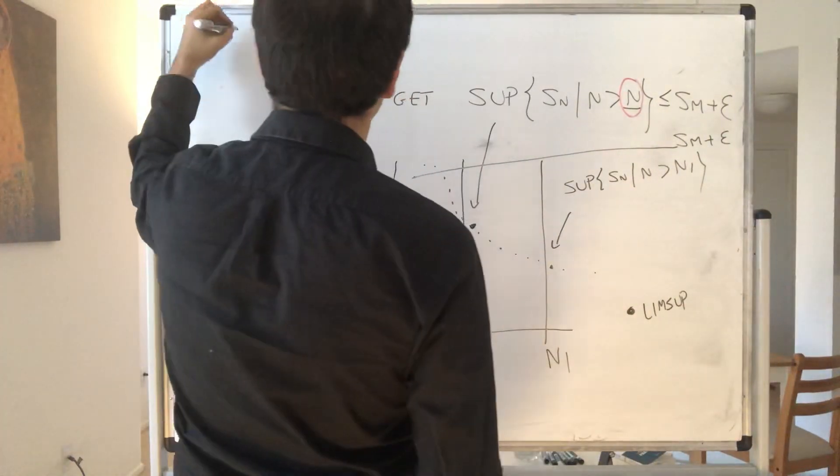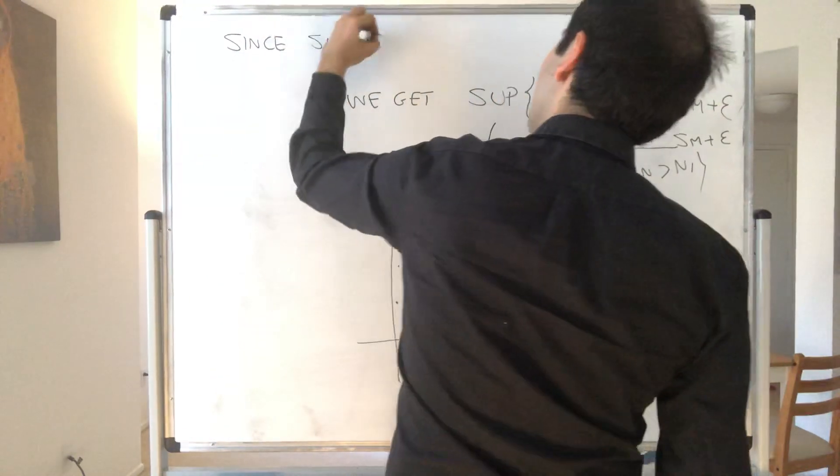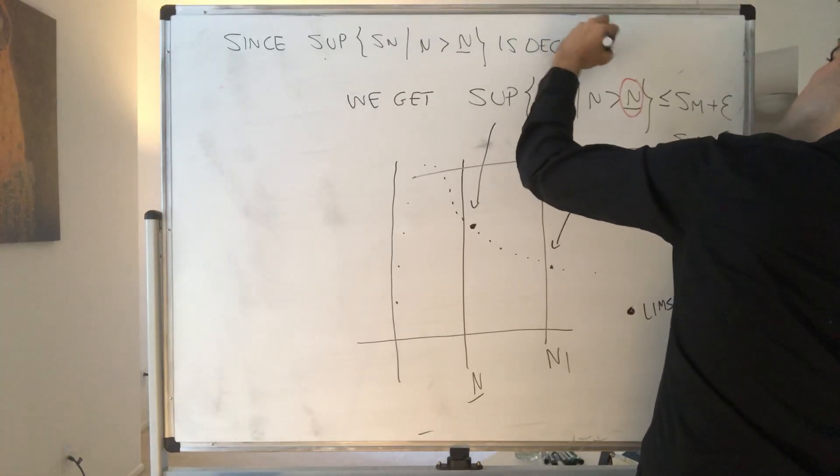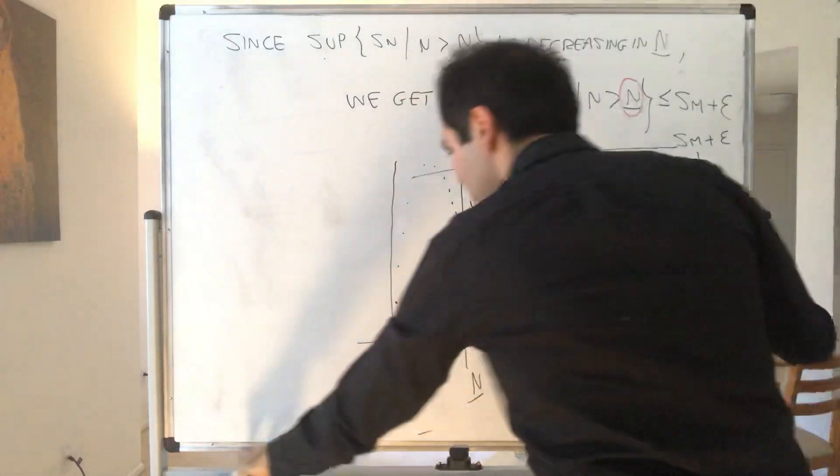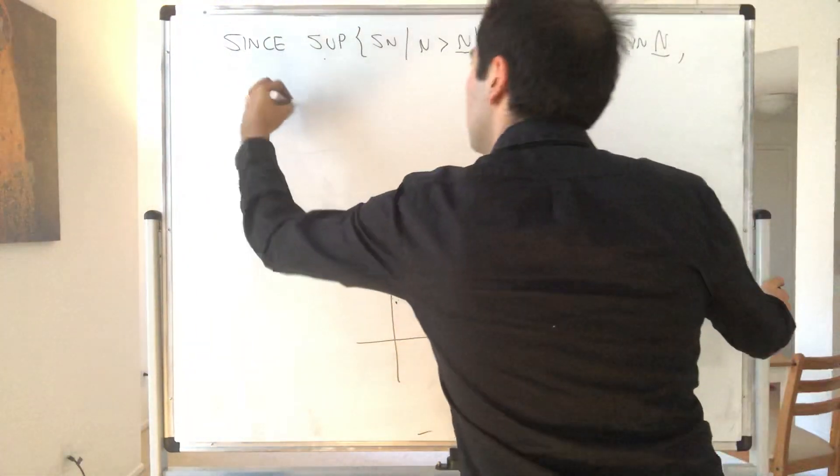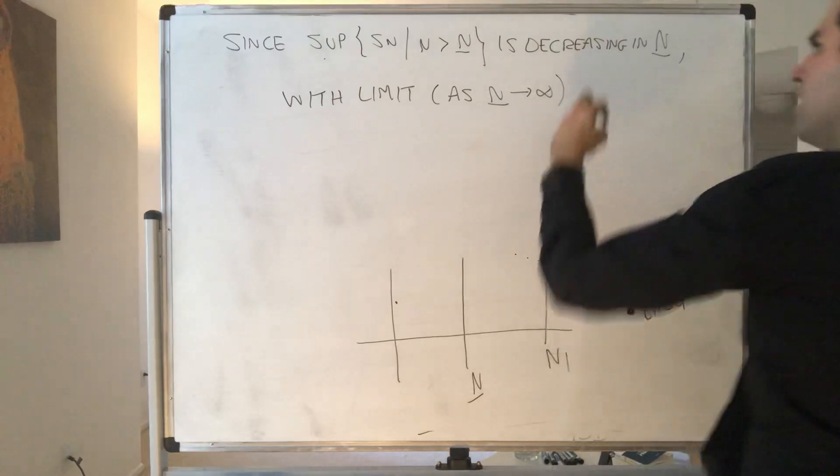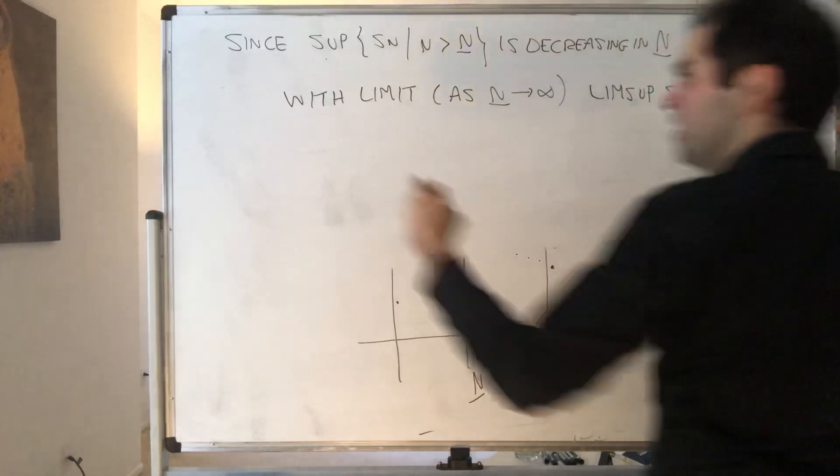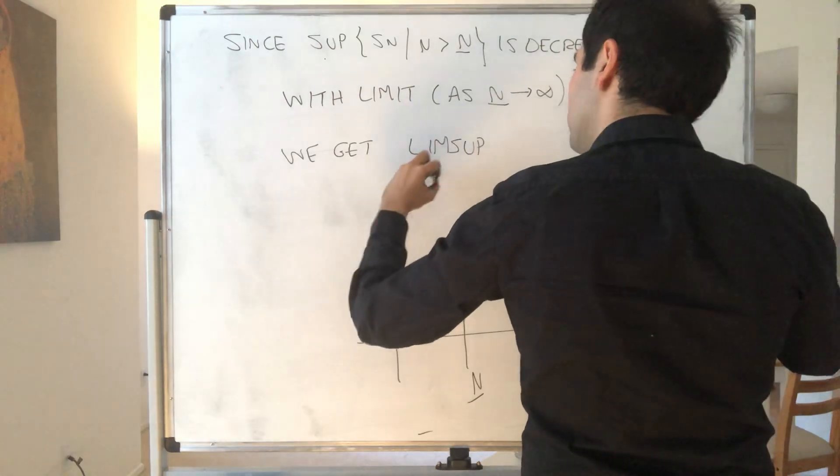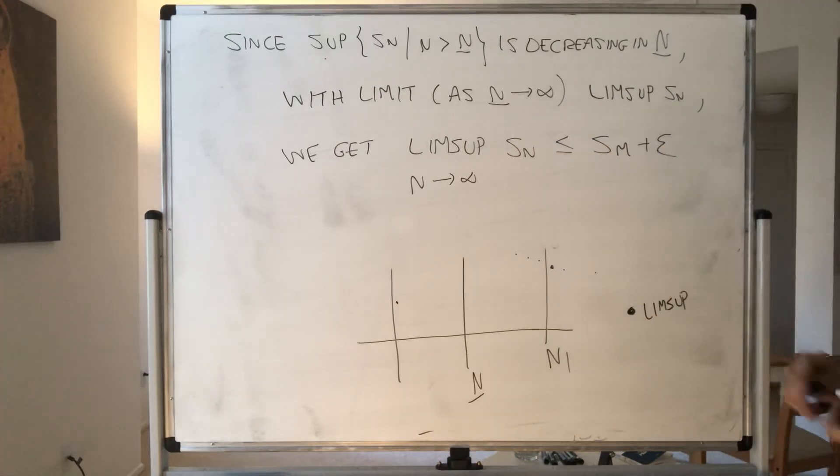So just to formalize this. Since the supremum of Sn where N is bigger than capital N is decreasing in capital N, with limit precisely the lim sup—that's how we define it—as capital N goes to infinity, we get rigorously that the lim sup as N goes to infinity of Sn is less than or equal to Sm plus ε.